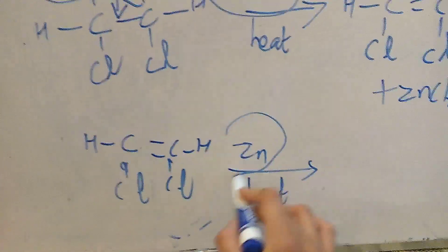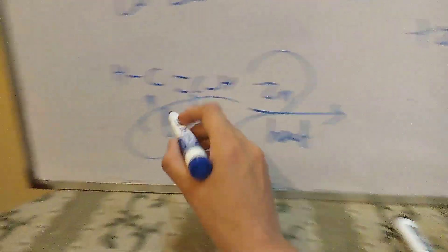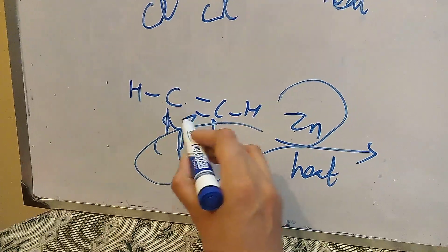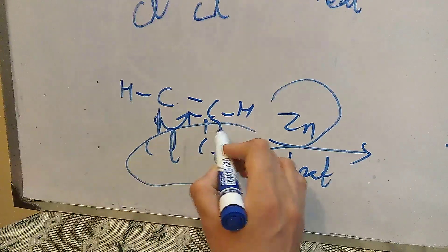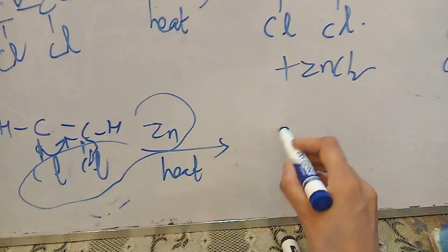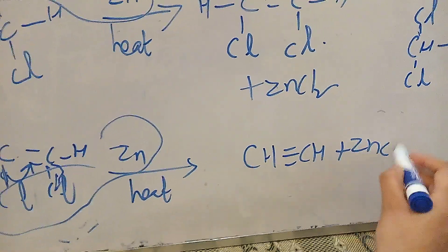Again, zinc will remove these two halogens. When it is removed, the bond will shift to the middle and form a triple bond. This bond will break. This will form CH triple bond CH plus ZnCl2.